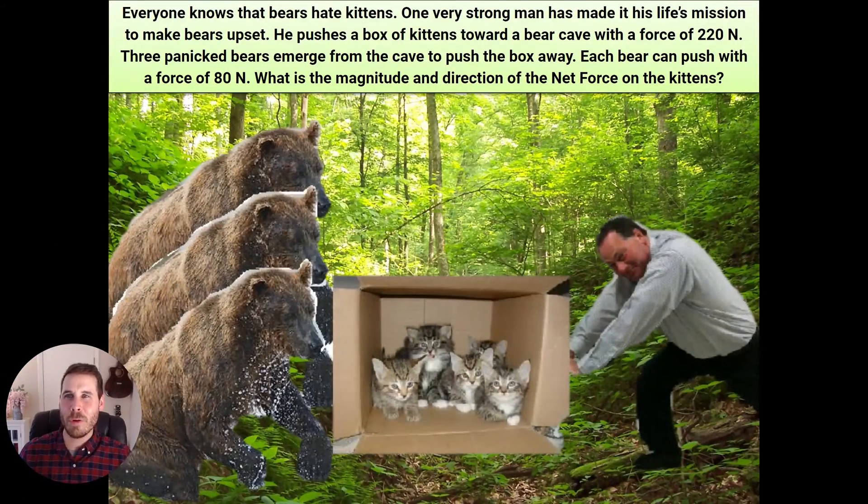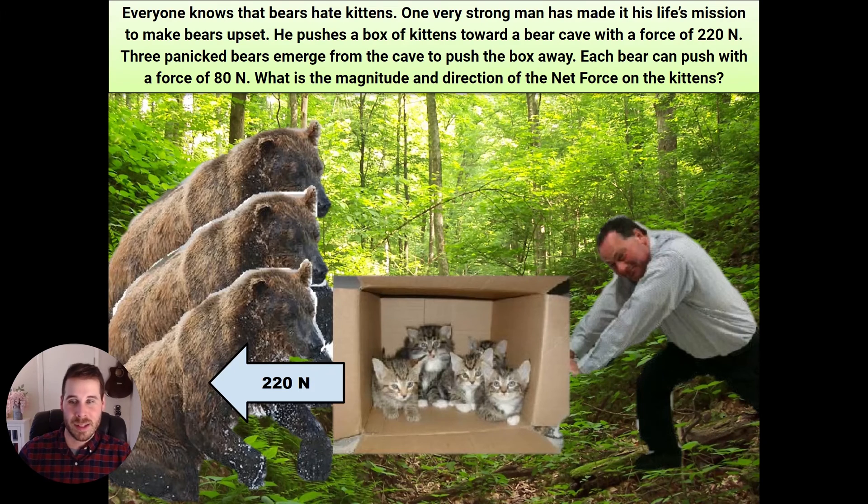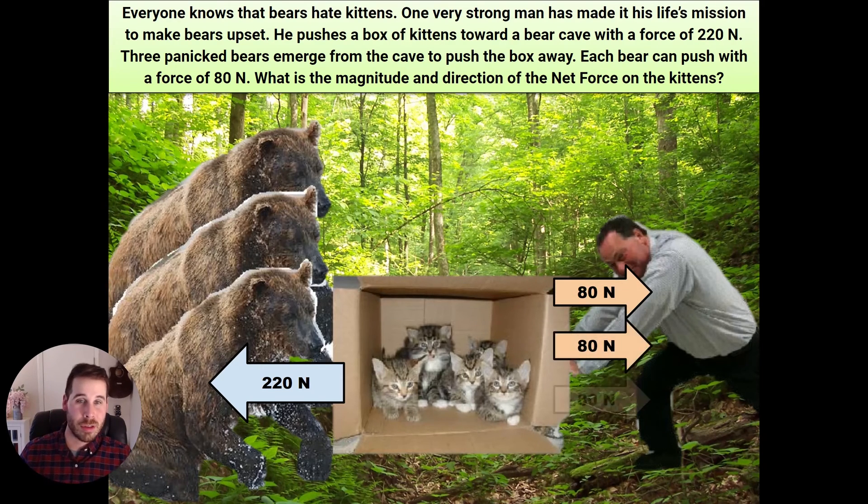So here's our second problem. Everyone knows that bears hate kittens. We all know that. One very strong man has made it his life's mission to make bears upset. He pushes a box of kittens toward a bear cave with a force of 220 newtons. Three panicked bears emerge from the cave to push the box away. Each bear can push with a force of 80 newtons. What is the magnitude and direction of the net force on the kittens? So again, they ask us for the magnitude, so we need to know how much, and they ask us for the direction, so we need to know in what direction the box is going to go. Here's the force that the man is applying to the box. The arrow is pointing in the direction of his force, and here are the three forces that we get, and it's 80 newtons from each bear. Even though the problem only said 80 newtons one time, you have to know that each bear is supplying that much force, so that's why there's three arrows there.